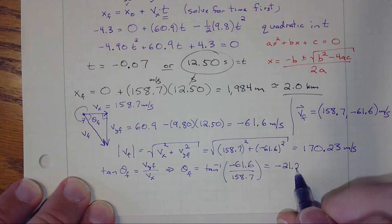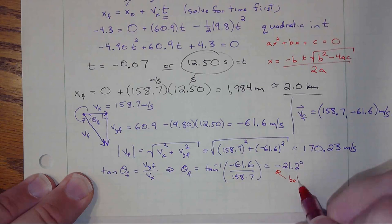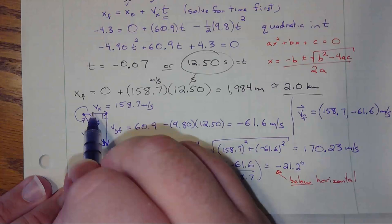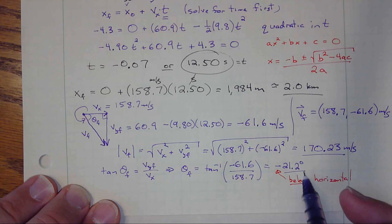The negative sign just means the angle is below the horizontal — clockwise from positive x. So the cannonball hits the water at 21.2 degrees below the horizontal at a speed of 170 meters per second. I'm almost at 25 minutes, so that's a long enough time to work through this problem.